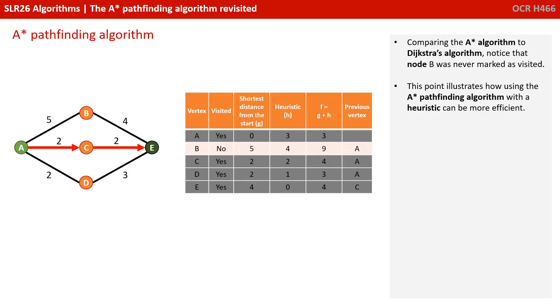Comparing A-star to Dijkstra's, you'll notice that node B was never marked as visited, and this point illustrates how using the A-star pathfinding algorithm with a heuristic can be more efficient.